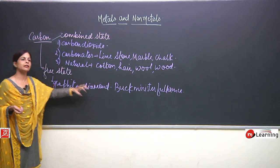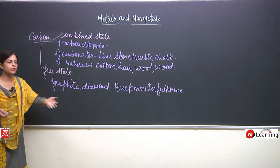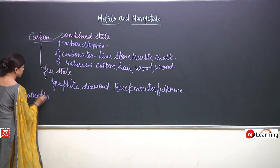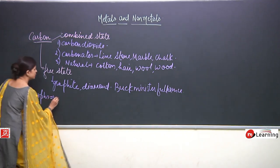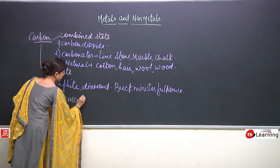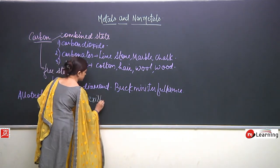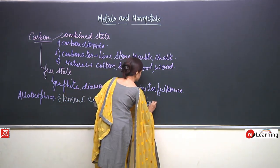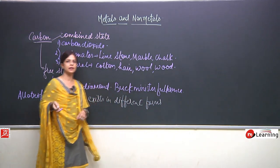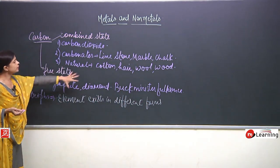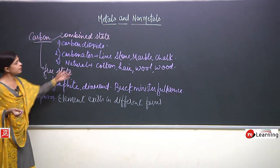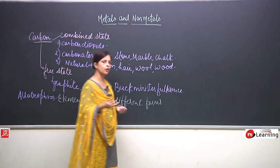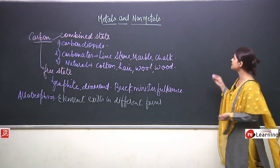Graphite and diamond are allotropes of carbon — they both exist in different forms while being made up purely of carbon. Even Buckminster Fullerene is made up of carbon. Still, these allotropes exhibit a lot of differences. Let us look at the differences between graphite and diamond.